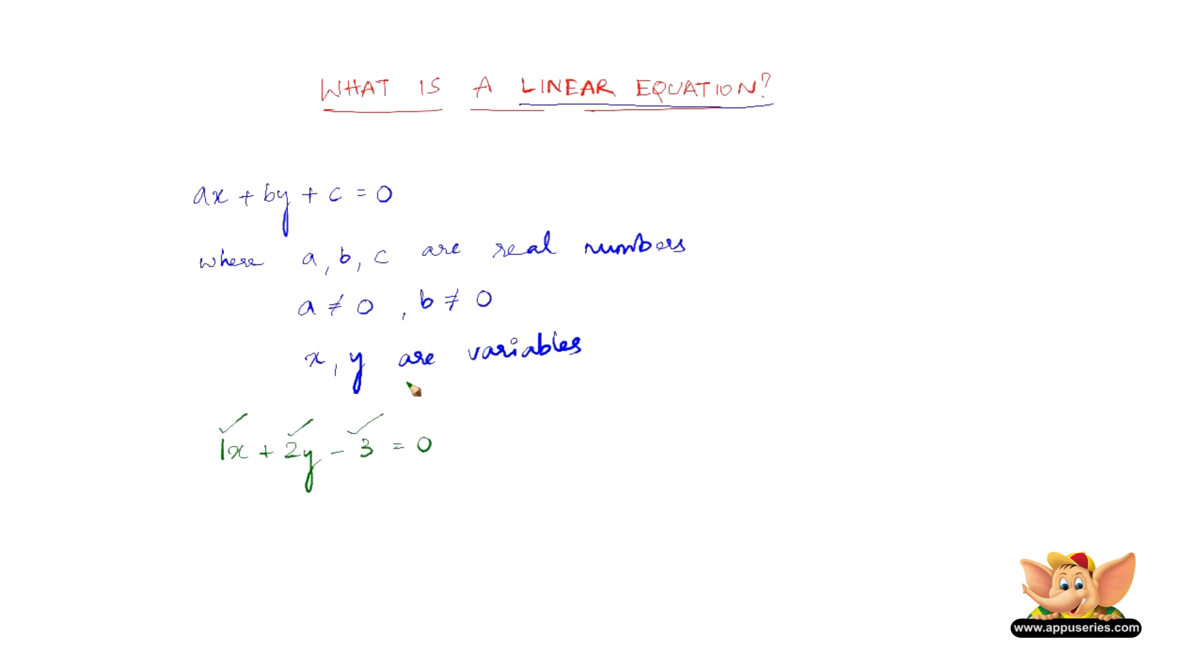So 1, 2, and minus 3 are all real numbers, a and b are not equal to 0, x and y are variables. And therefore, x plus 2y minus 3 equal to 0 is a linear equation.